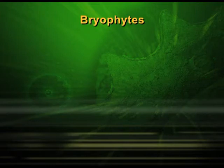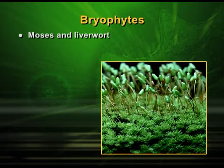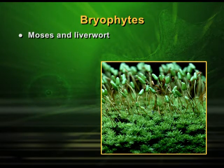Dear students, in this session we will discuss another aspect of plant reproduction and we begin with bryophytes. Bryophytes is a category which includes mosses and liverworts, and they normally grow on rocks. If they grow on rocks, then it is very simple to understand that they have contributed a lot for succession of the plant kingdom.